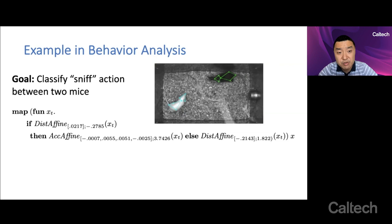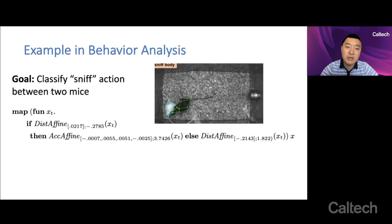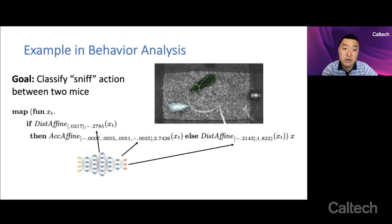which can generate a program that looks like this. The details of this program aren't so important. The main things I'd like you to observe is that it has symbolic structure in the form of if-then-else statements. It has these functions or functional modules which have differentiable parameters or continuous parameters. In these cases, these functions are relatively structured. In some of our other collaborations, they're actually small neural networks that are inside this program structure. And so everything is learned in conjunction with the program structure. That's the basic idea.